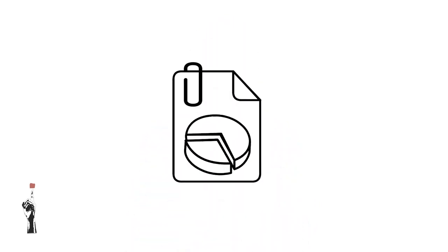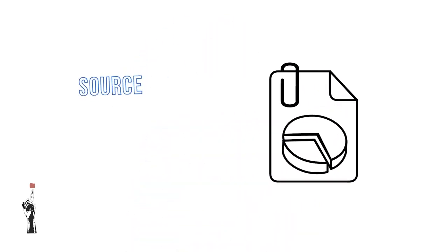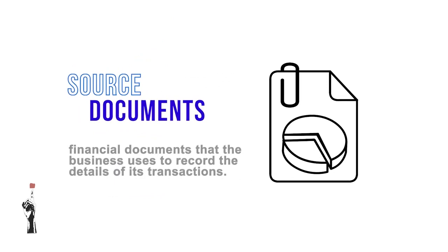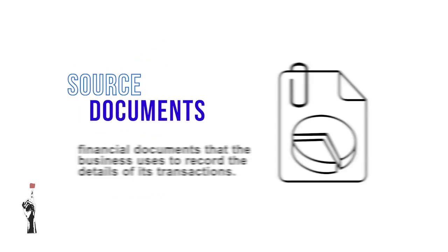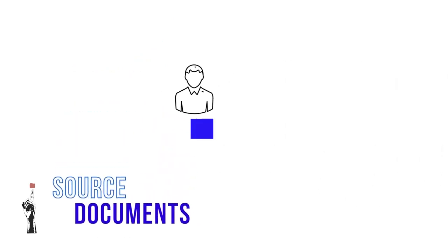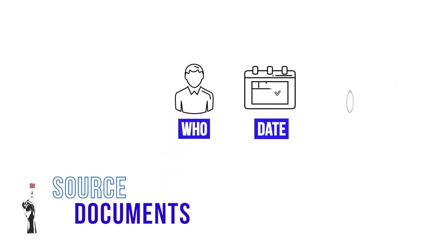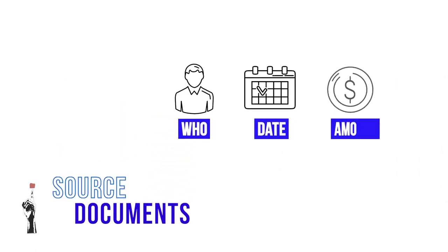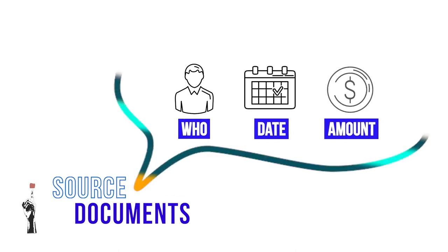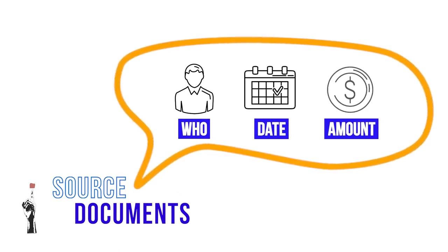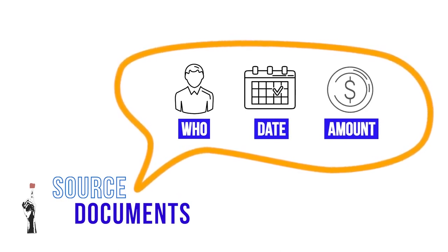Before we start, we need to quickly recap on what source documents are. Do you remember what a source document is? Source documents are financial documents that the business uses to record its transactions — the purpose of the transaction, such as to whom the transaction was made, the date of the transaction, and the amount of the transaction. All these details are captured together to make source documents.